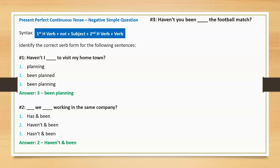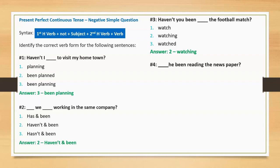Question three: 'Haven't you been blank the football match?' Option one: watch. Option two: watching. Option three: watched. Correct answer: watching. Full sentence: 'Haven't you been watching the football match?'